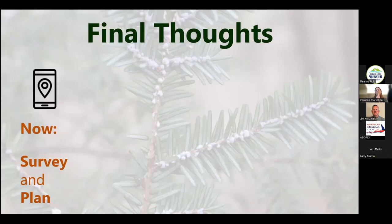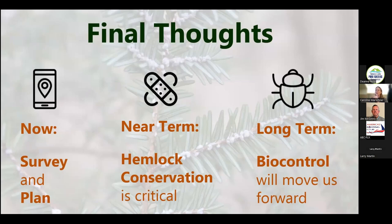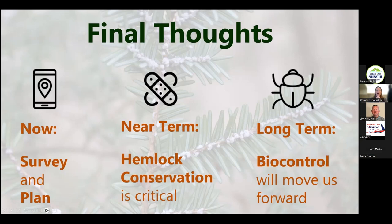Final thoughts: I've been saying for many years — survey and plan in the near term, hemlock conservation is critical in the near term, and long-term biocontrol moves us forward. That's still generally true, but in the Seneca Lake watershed specifically, you have a lot of HWA already present. We may be past the survey stage — the immediate priority is figuring out how to conserve hemlocks before they are gone and getting them treated now. And we have a really active biological control research project in your area and would love to work together to see what's going on with biocontrol in this watershed. Thank you.